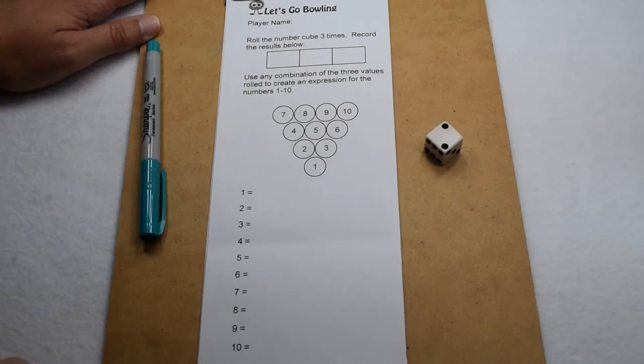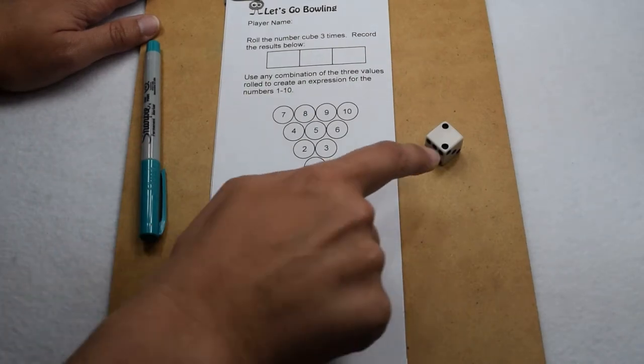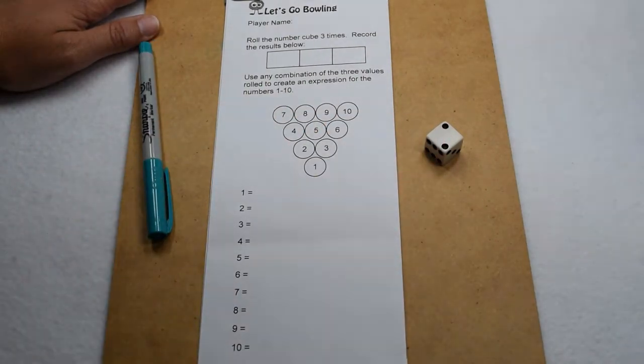We are going to play a bowling game today. In order to play, we need a game board, we need a dice, and we need something to write with.